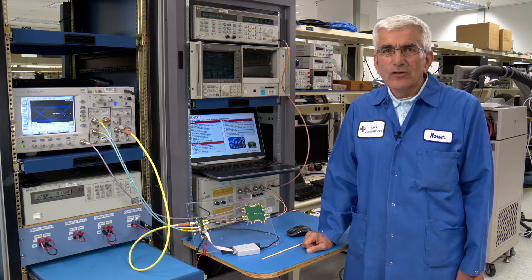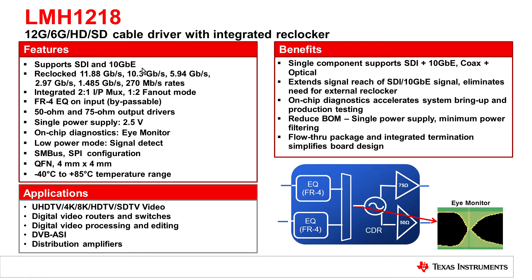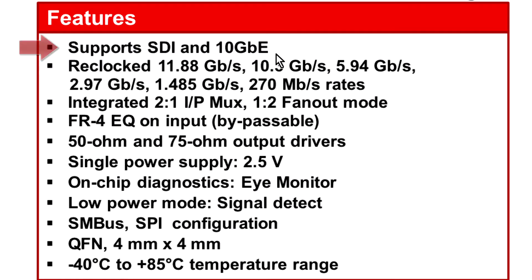Please first allow me to go over the features of LMH 1218. LMH 1218 cable driver with integrated re-clocker supports dual protocol: SDI and 10 gigabit ethernet, meaning it supports dual media — 75 ohm coax and fiber. Additionally, LMH 1218 re-clocks data rates all the way from 11.88 to 270 megabits SDI data rates and 10.3125 gigabits ethernet.